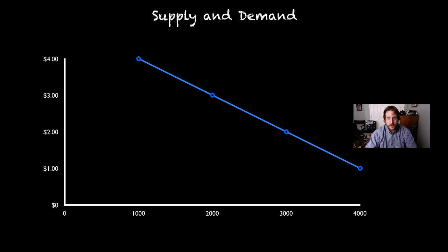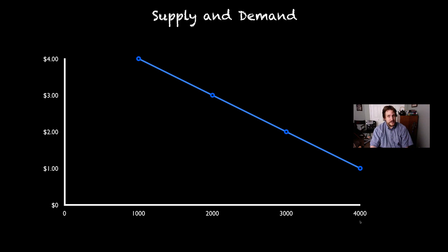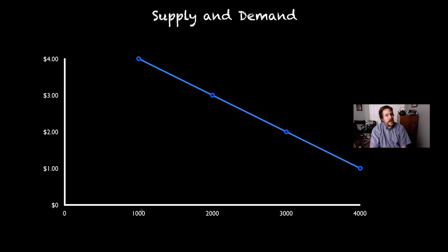Here we've got our demand curve. When we get the price at a dollar, people are willing to buy a lot of something — whether it's Brussels sprouts or candy or whatever — and then as the price goes up, less and less people are willing to purchase that good.